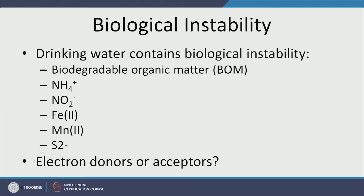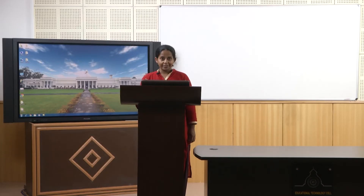Among ammonia, nitrate, iron, manganese, and sulphide, some are electron donors and some are electron acceptors. Pause and try to identify which are which. Highly reduced compounds like ammonia and sulphide are electron donors, while highly oxidized compounds are electron acceptors.